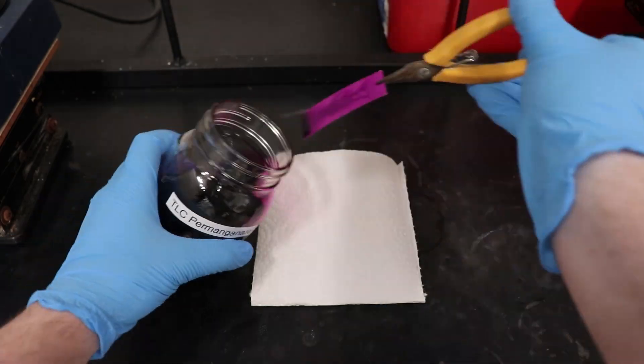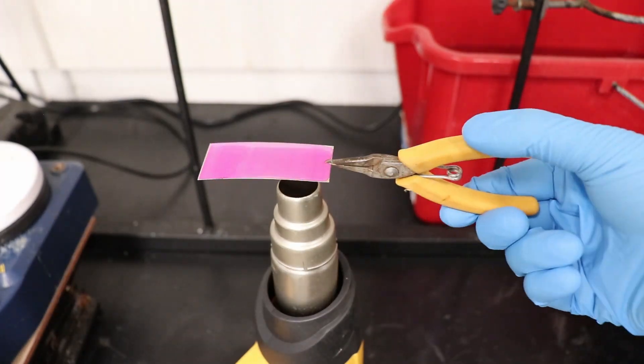I tried a permanganate stain and it seemed to only develop the fenbufin spot and maybe a bit of the biphenyl. And when I heated the plate, it all just turned into a uniform brown color.